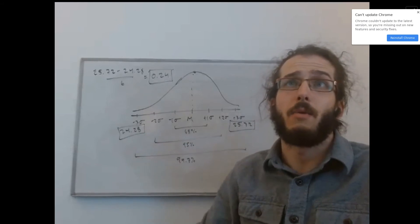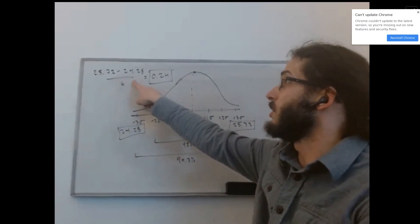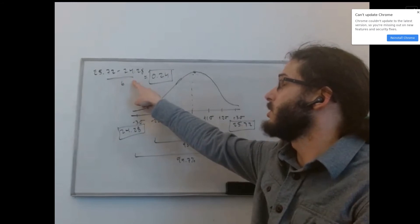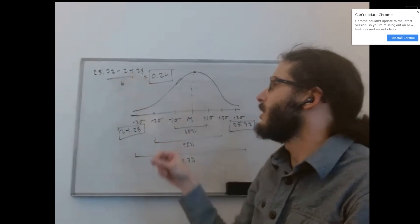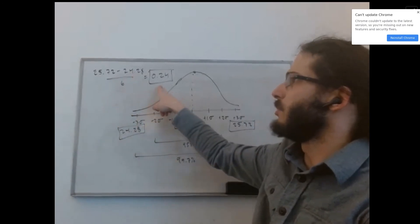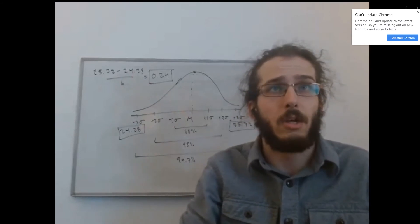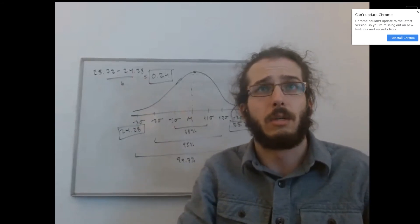And that is the trick for how we make the calculation. So you can see up here, I've found the difference between 25.72 and 24.28. That's 1.44. And then when we divide that by six, we come up with 0.24 kilograms, which will be the standard deviation of the bags of rice in this experiment.